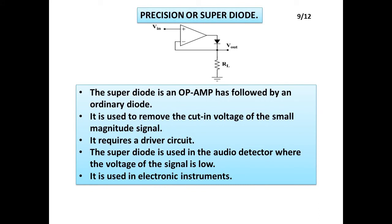Precision or Super Diode: The super diode is an op-amp followed by an ordinary diode. It is used to remove the cutting voltage of small magnitude signals and requires a driver circuit. The super diode is used in audio detectors where the signal voltage is low, and in electronic instruments.